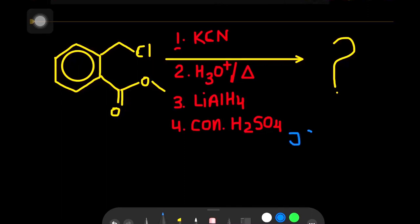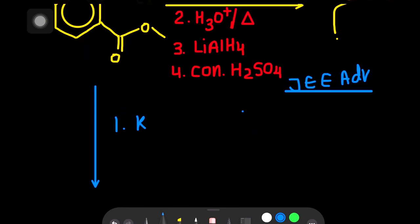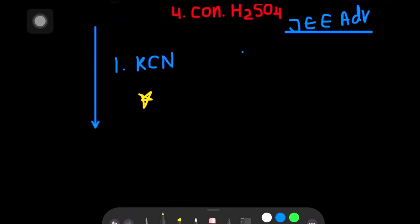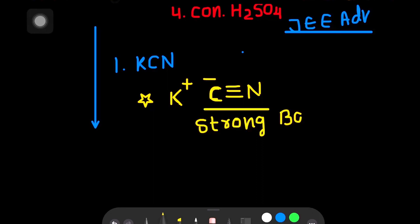This problem was asked in JEE Advanced. First reagent is potassium cyanide. Potassium cyanide is a metal-based compound, so potassium bears a positive charge and cyanide bears a negative charge. This cyanide is a strong base or nucleophile.